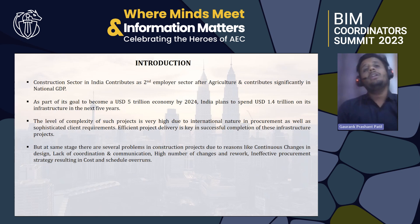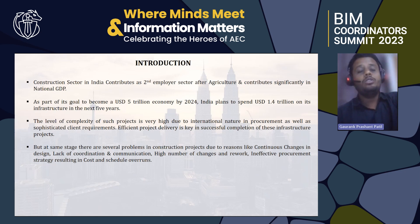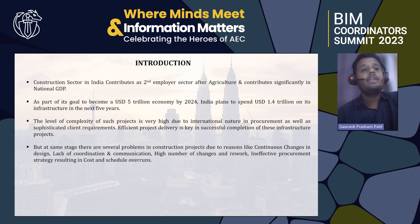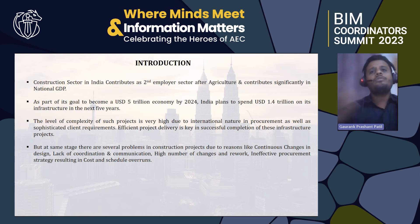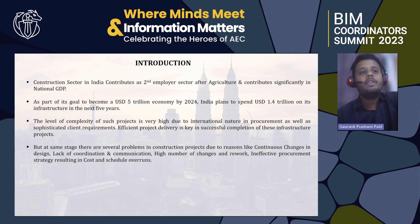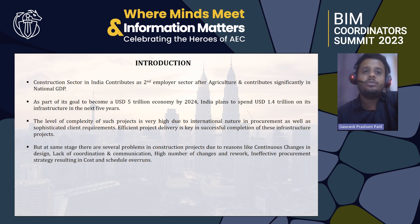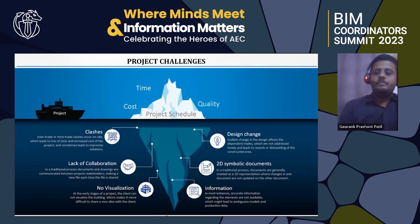They want to make an economy of 5 trillion dollars by 2024 and have already started executing plans with an investment of 1.4 trillion dollars. There are 26 green highways being executed all across the country, and many bridge projects coming up like complex ceiling extension projects. This leads to major challenges in the Indian construction industry: lack of coordination, lots of design changes, high rework, and ineffective procurement strategy — all resulting in cost and schedule overruns.